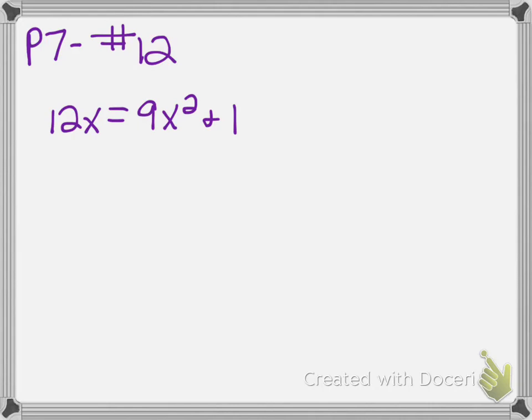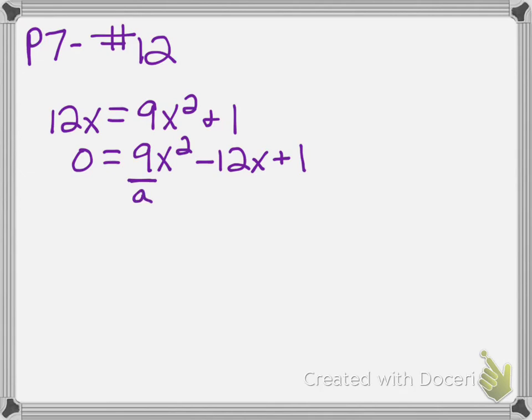Just like before, I need to get this equation arranged correctly. I'll take the 12x and subtract it to move it over, writing it in order with minus 12x in the middle where it belongs. So a is 9, b is negative 12, and c is 1.